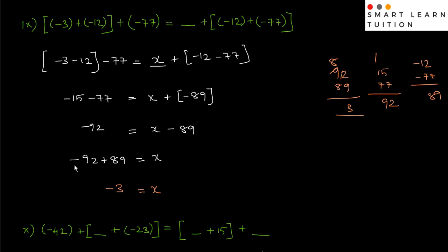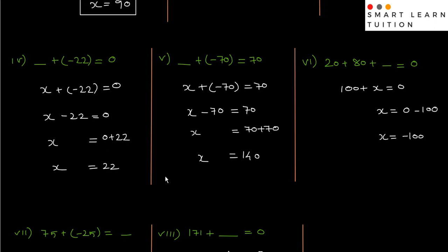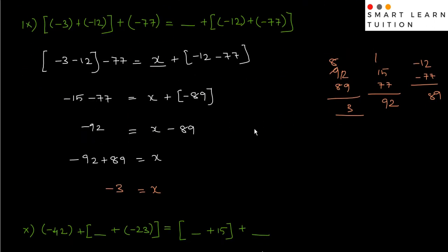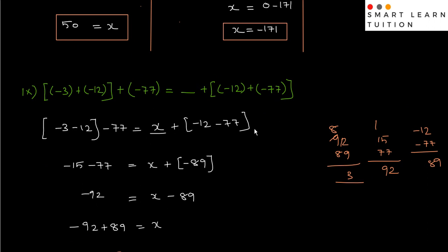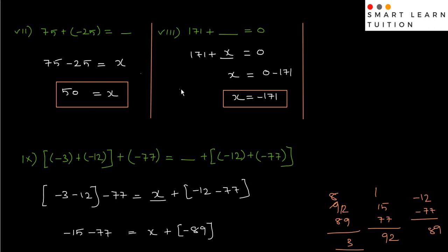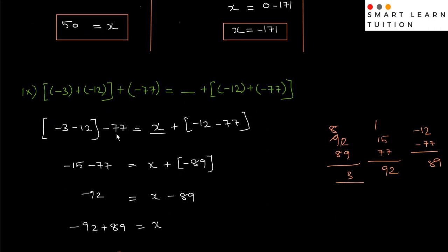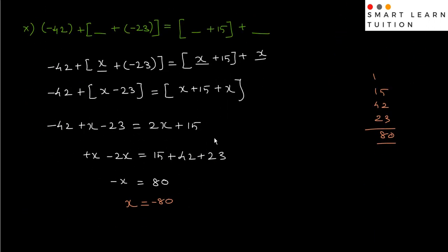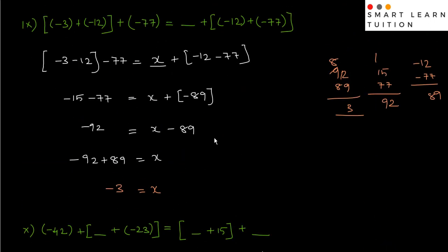So minus sign, minus sign. So minus 3 equals to x. This is the final answer — x value is minus 3. So now let's review the 7th, 8th, and 9th sums. Okay, thank you.